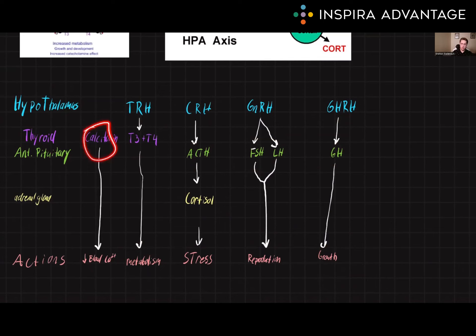Calcitonin helps to regulate calcium levels in the blood, specifically by decreasing the blood calcium through different mechanisms, such as inhibiting osteoclasts, which are cells that break down bone and release calcium into the bloodstream; stimulating osteoblasts, which are cells that build bone and remove calcium from the bloodstream; as well as decreasing the reabsorption of calcium in the kidneys and decreasing the absorption of calcium from the gut. Calcitonin plays a key role in maintaining the balance of calcium levels in the body.